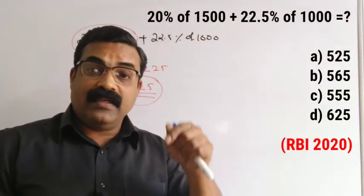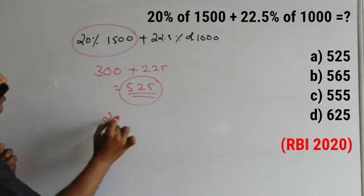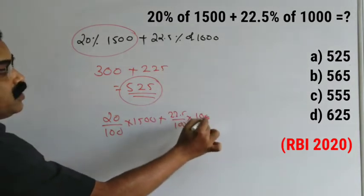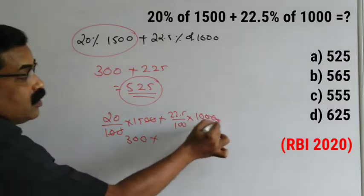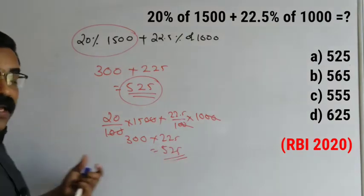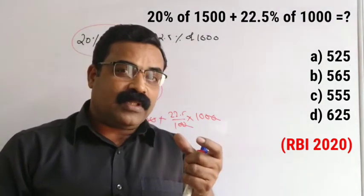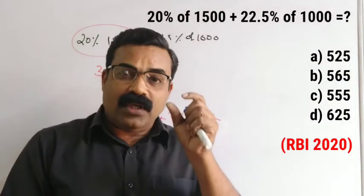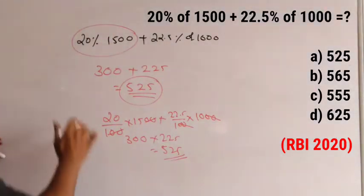This is very important and you need to practice solving these type of questions using this method. Otherwise if you find 20% of 1500 the long way — 20/100 × 1500 plus 22.5/100 × 1000 — cutting zeros and multiplying, you'll get the same answer 525, but you are consuming a lot of time. In competitive exams, time management is very important. We need to solve these questions as early as possible without using pen and paper.